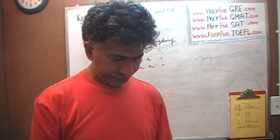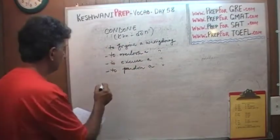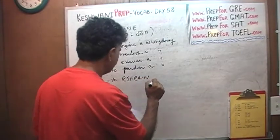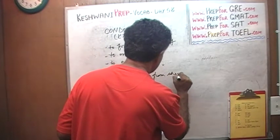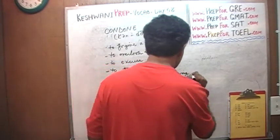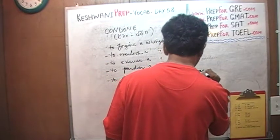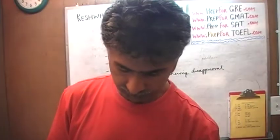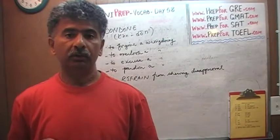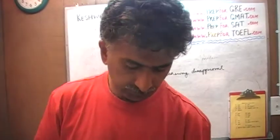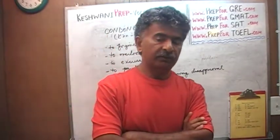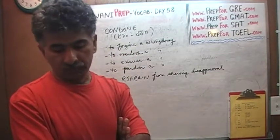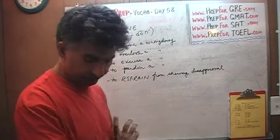And finally, condone means to refrain from showing disappointment. If someone does something wrong and you withhold your disapproval — you do not show your disapproval to the person; you're not necessarily excusing or pardoning them, but you're not formally showing disapproval — that is also called condoning it. Let's learn about 'refrain,' that's the next word.